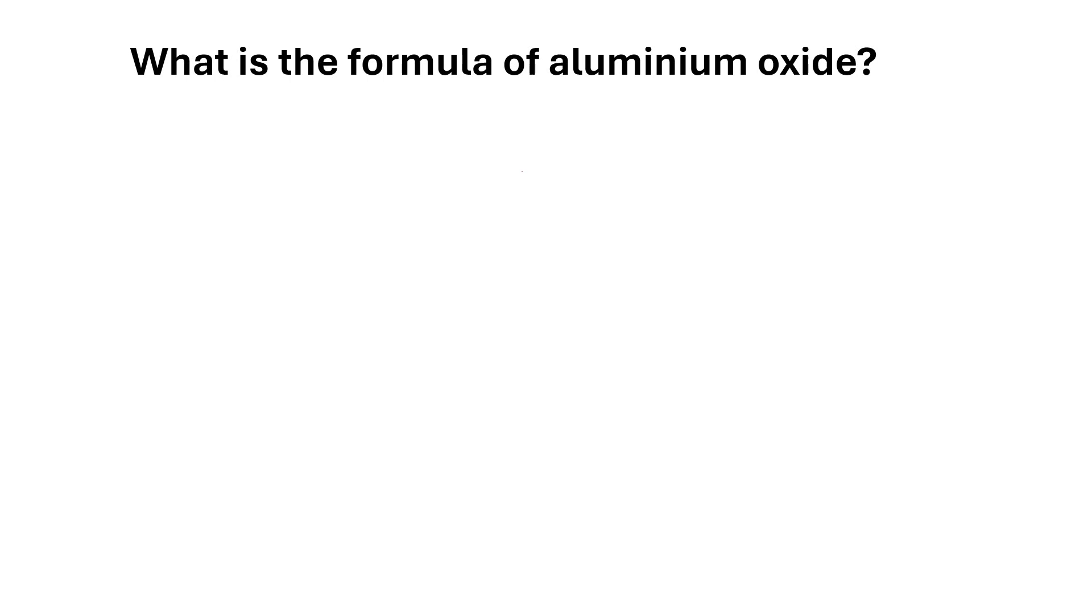First of all you need to know the ions for aluminium and oxide. The aluminium ion is a 3+ ion and the oxide ion is a 2- ion. If you don't know how to work out the charge on ions, I'll put a link up to a previous video. So what we do then is we cross over these numbers, so the 3 next to aluminium comes down next to oxygen and the 2 next to oxygen comes down next to aluminium, and we get Al2O3.